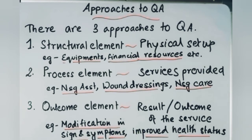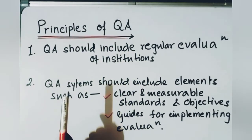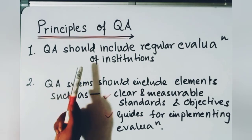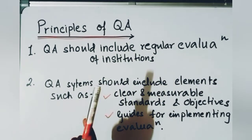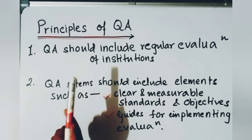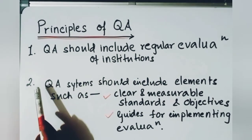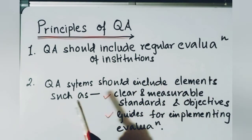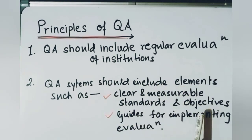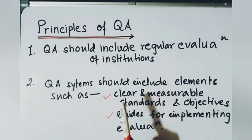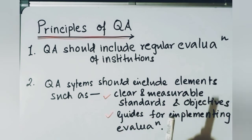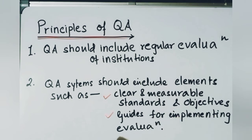Now let's learn the principles of quality assurance. Principle one: quality assurance should include regular evaluation of institutions — we can't evaluate an institution once and then stop; we need to evaluate it regularly. Principle two: the quality assurance system should include elements such as clear and measurable standards and objectives. Whatever institution we are evaluating, they should have clear standards we can compare against, and we should have guides for implementing the evaluation — a complete guide for how to check the product or service.